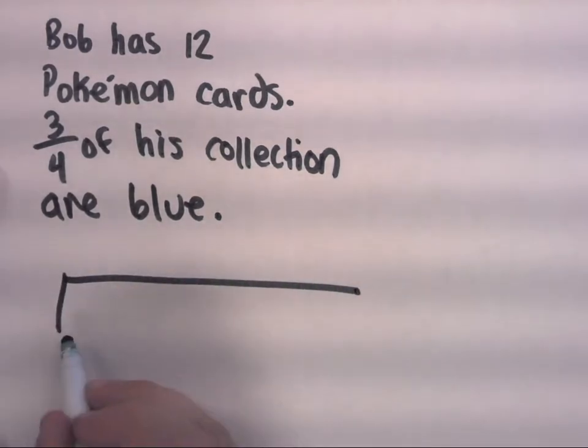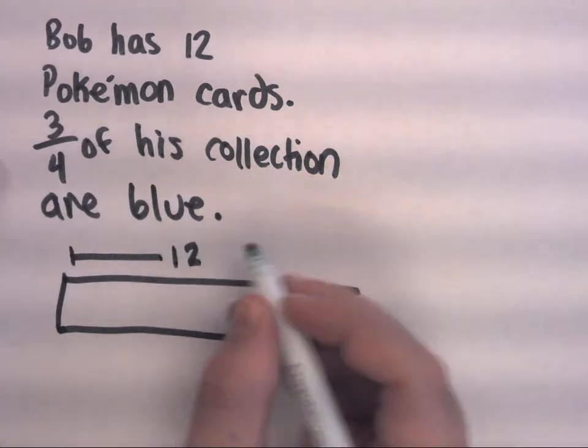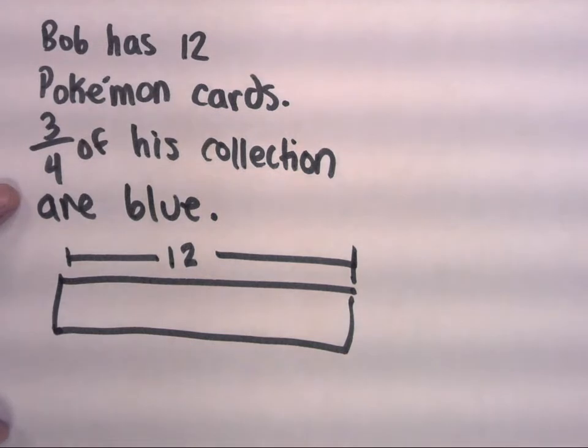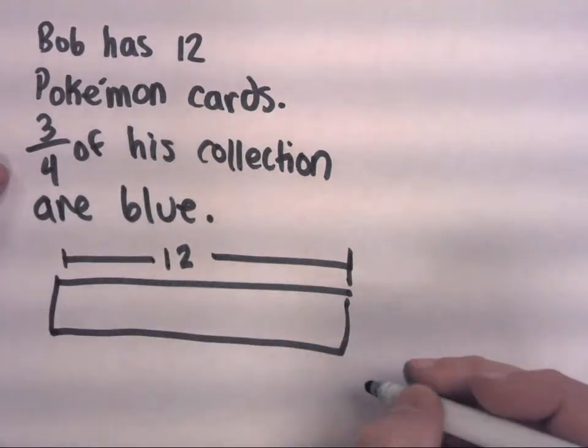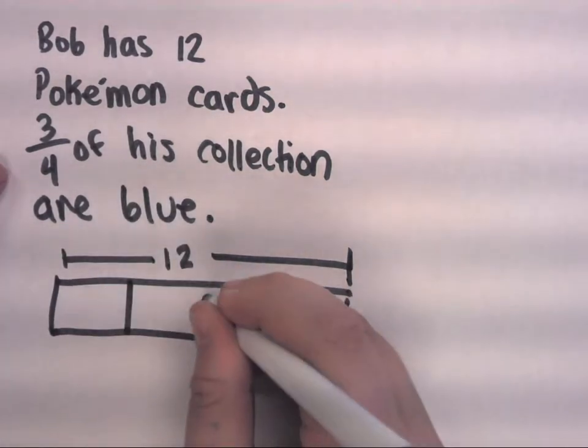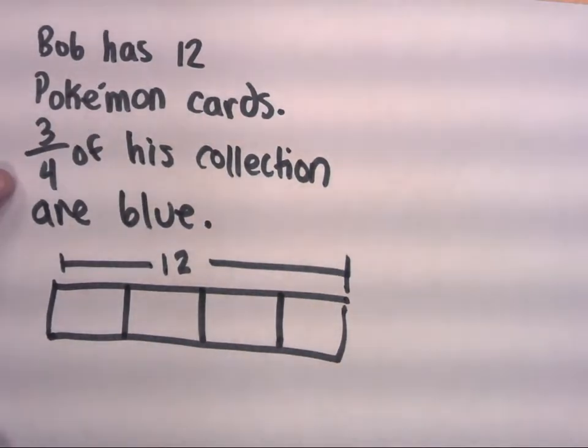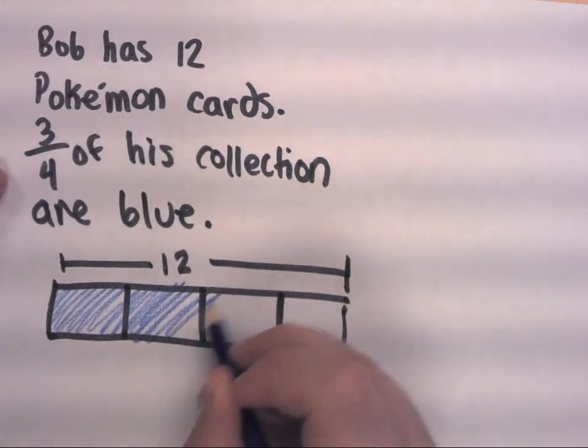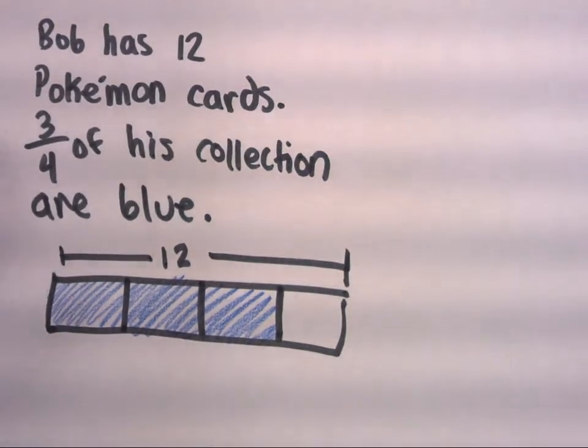All right. So what I'm going to do is I'm going to draw a unit here. I'm going to say this whole unit is representing 12. That's the total amount of cards in this problem. And then since we want to know 3/4, I'm going to divide this whole unit here, this unit of 12 into 4 equally partitioned areas here. And since I'm interested in 3 out of the 4, 3/4 of 12, these boxes right here are going to tell me what 3/4 of 12 is.